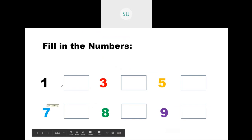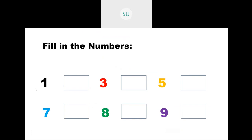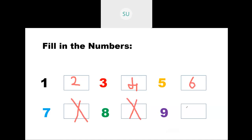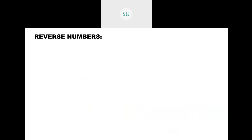So we have 1. After 1, what number comes? After 1 we have 2. Then 3. After 3 we have 4, 5, 6. After 6 we have 7. After 7 we have 8. There is nothing between 7 and 8. Then 8, and after 8 we have 9. And as we just saw, after 9 we have 10. 1, 0 — TEN, 10.